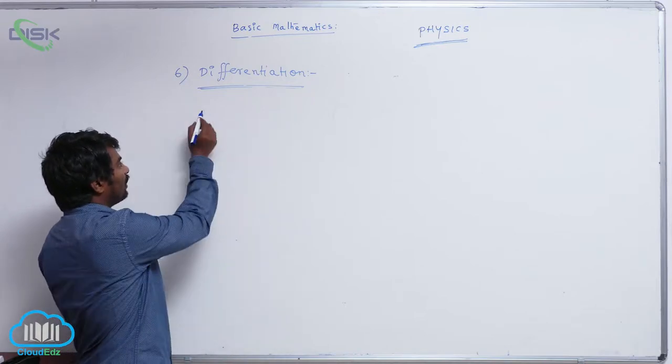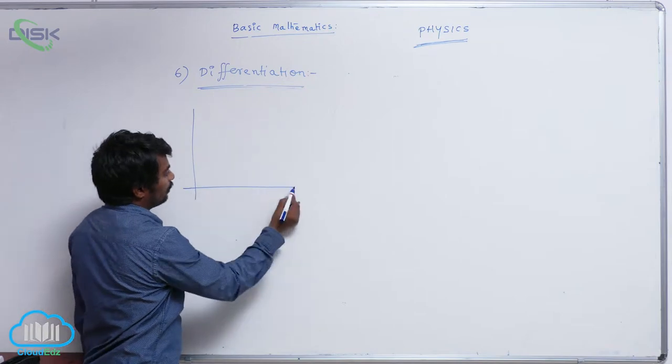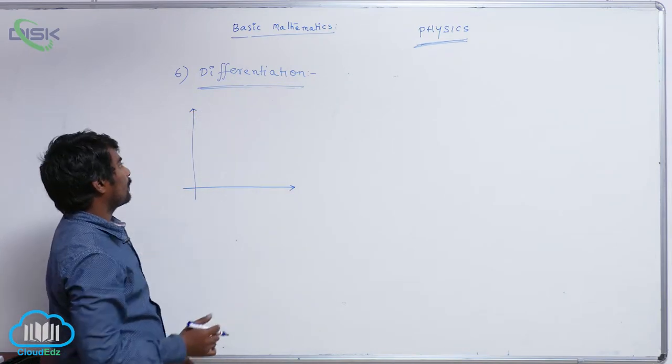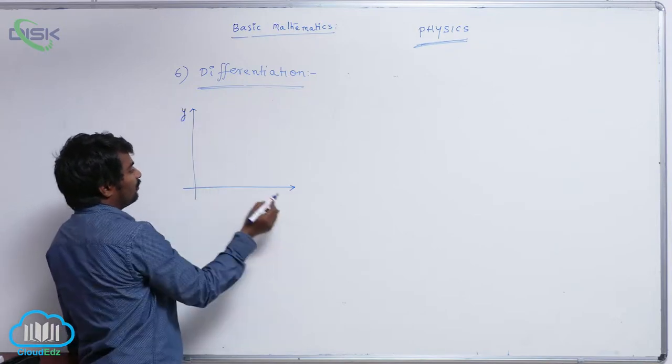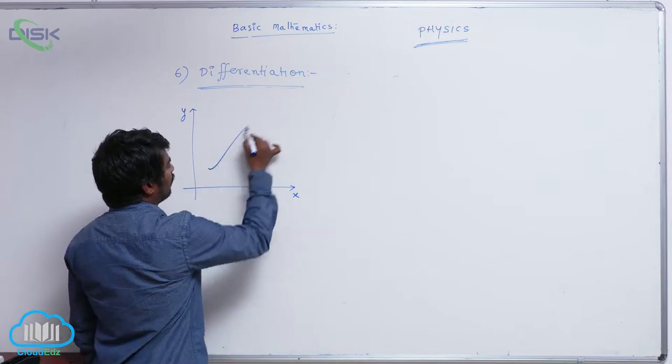Let us go for instantaneous change of y with respect to x. So from graph, how to calculate that I will see. Y-x graph, let me take an arbitrary graph like this.